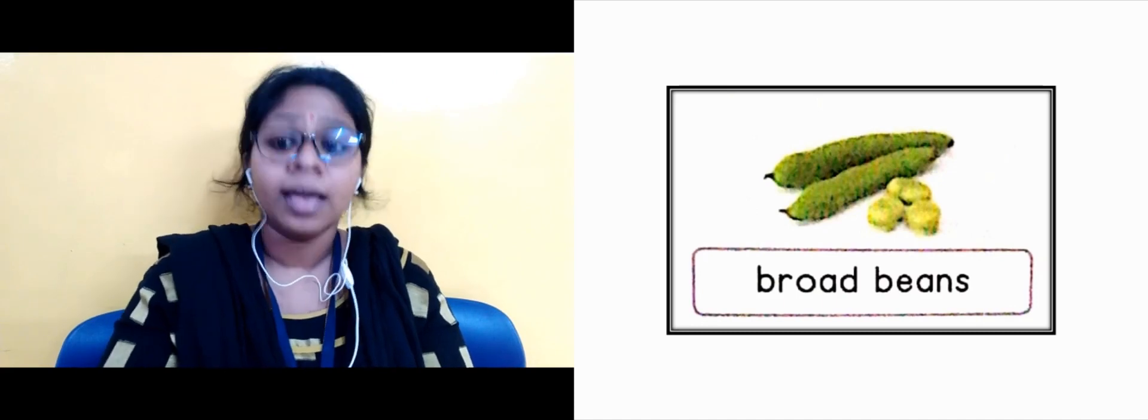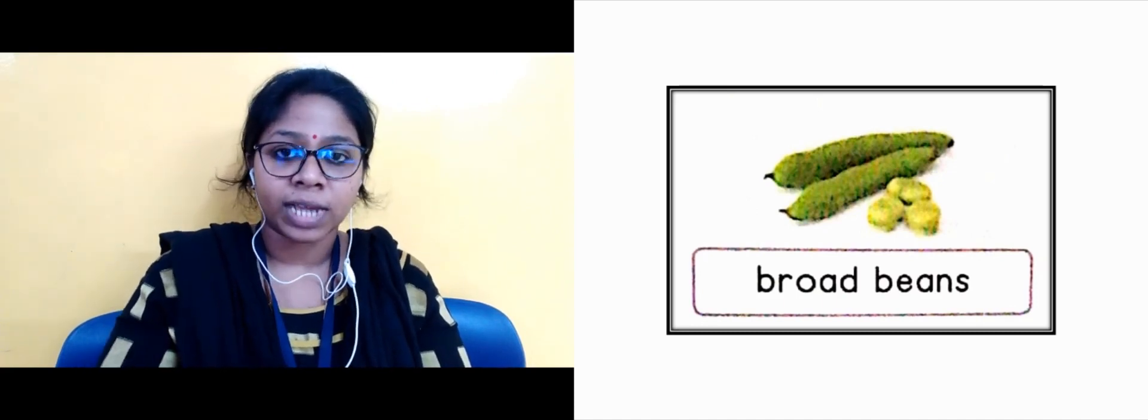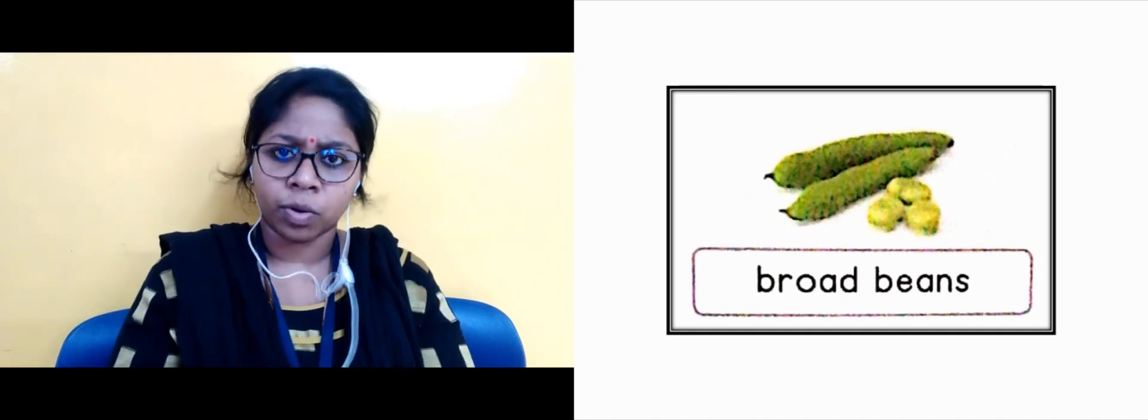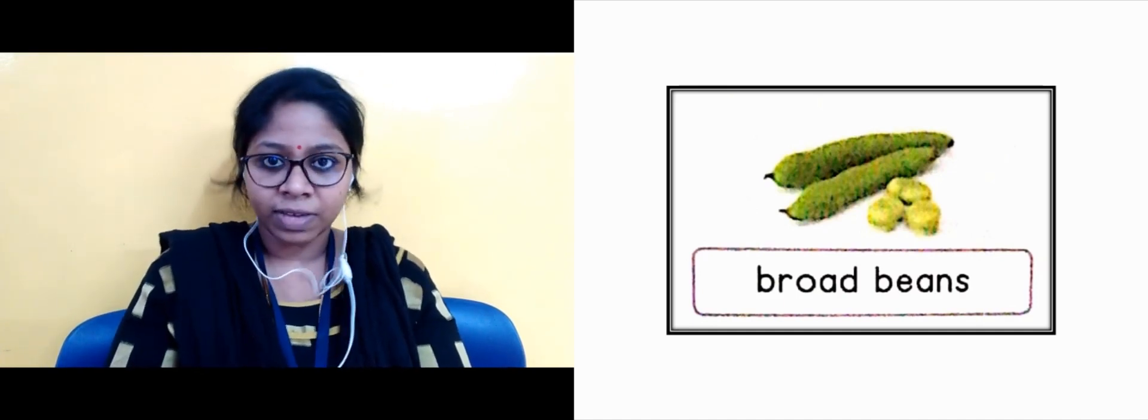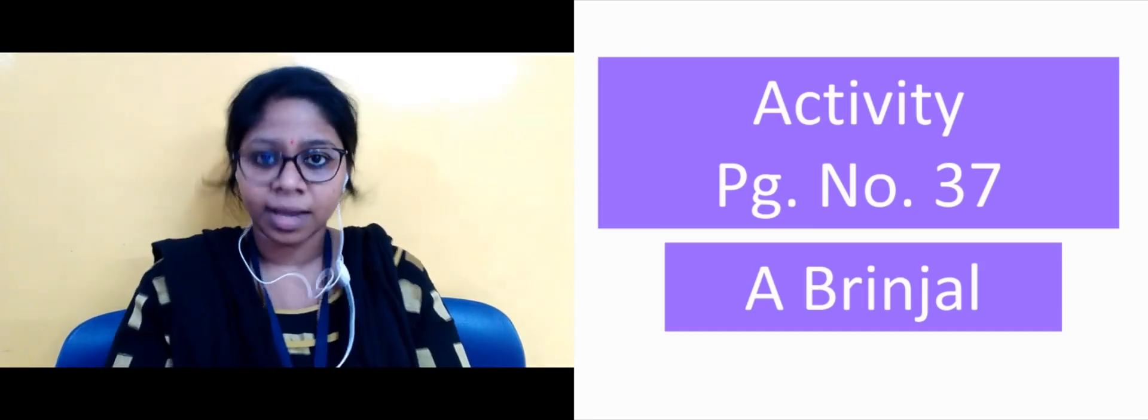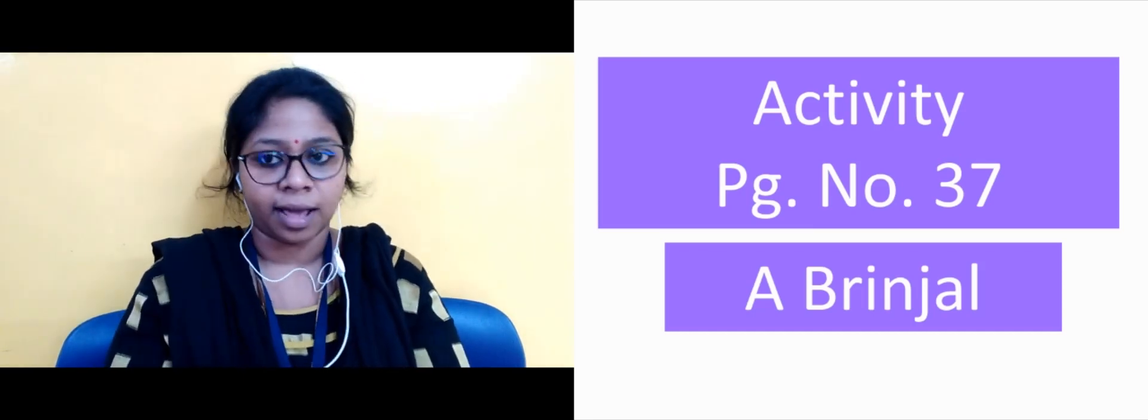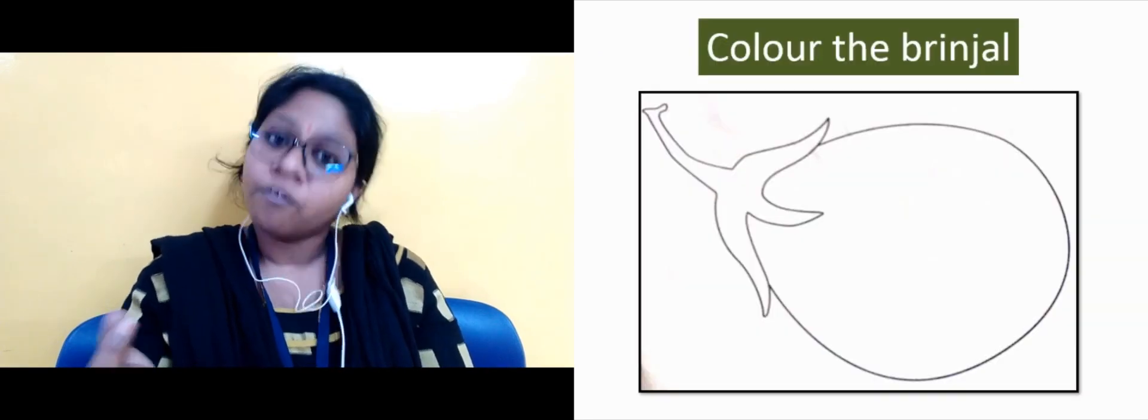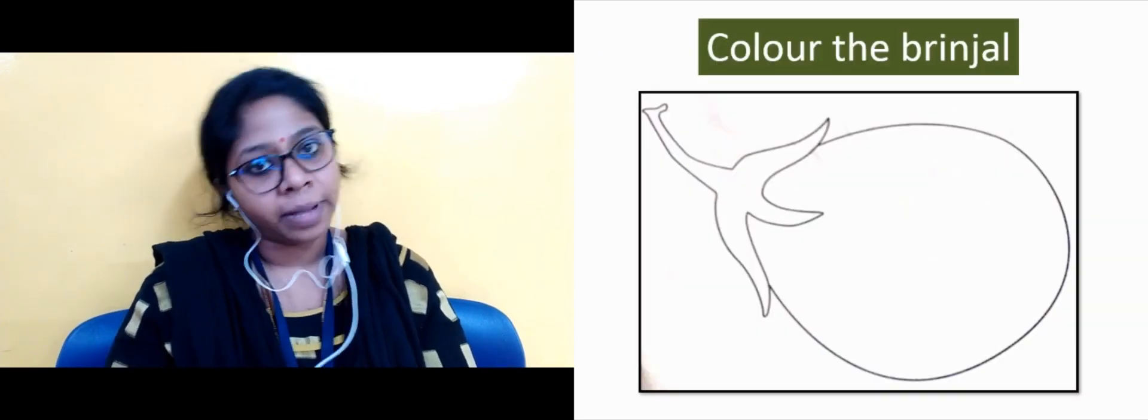For example, you can see capsicum. That is a green vegetable. So what do you do? Yes, color that capsicum with green. Green color, then you have to color it. And on it is palak, which we call spinach palak. If it is green color, then you will color it.